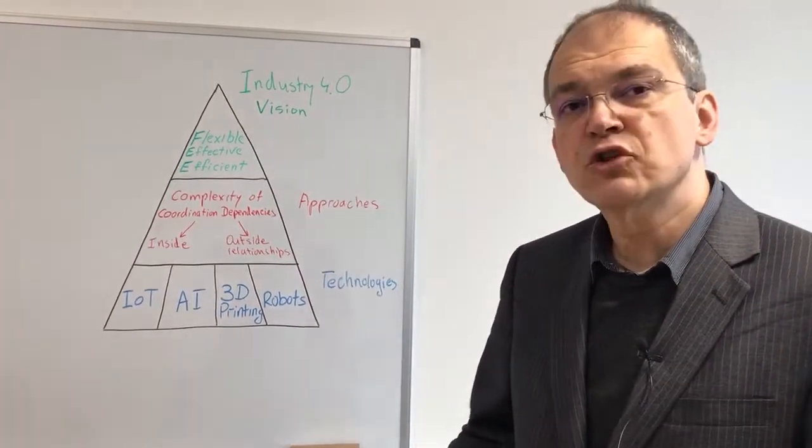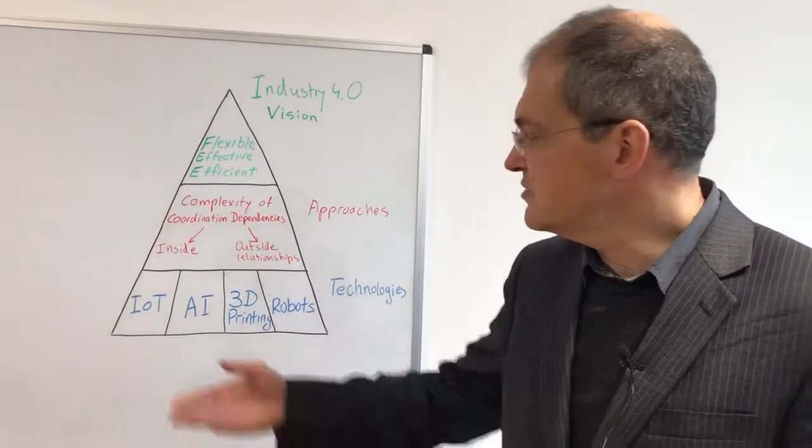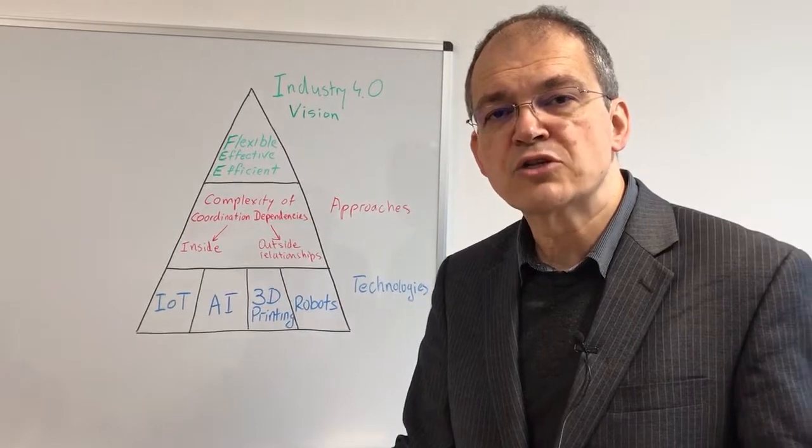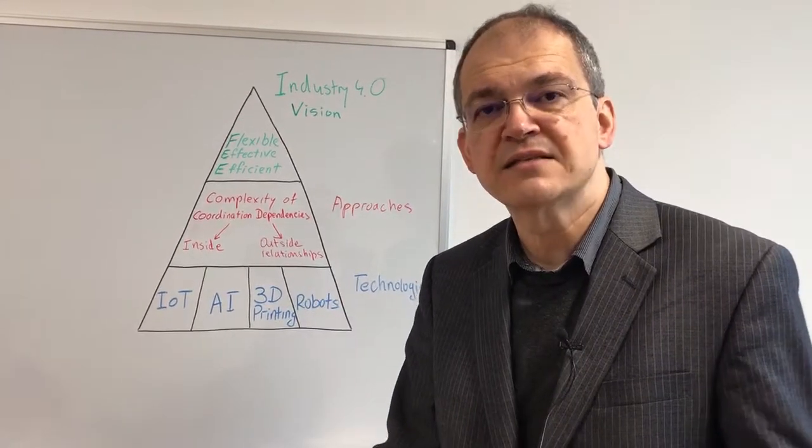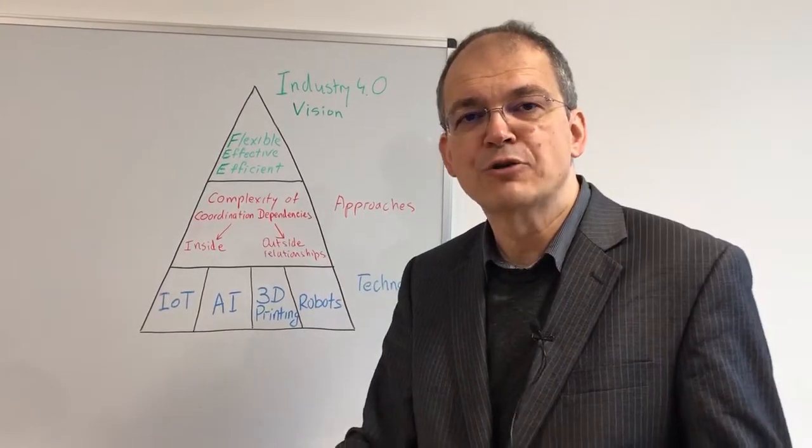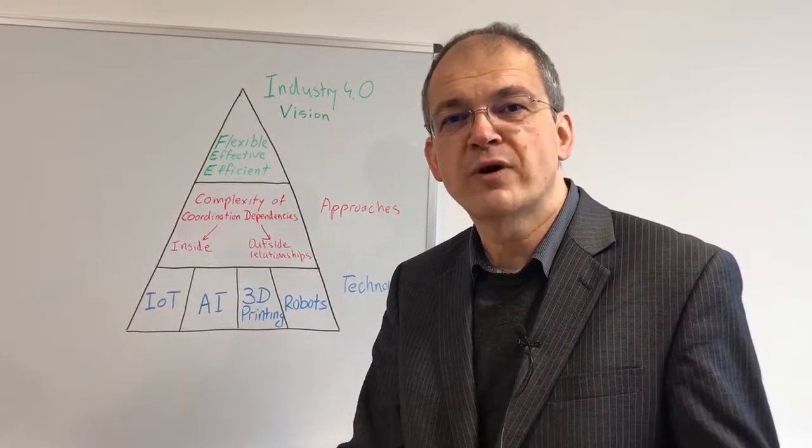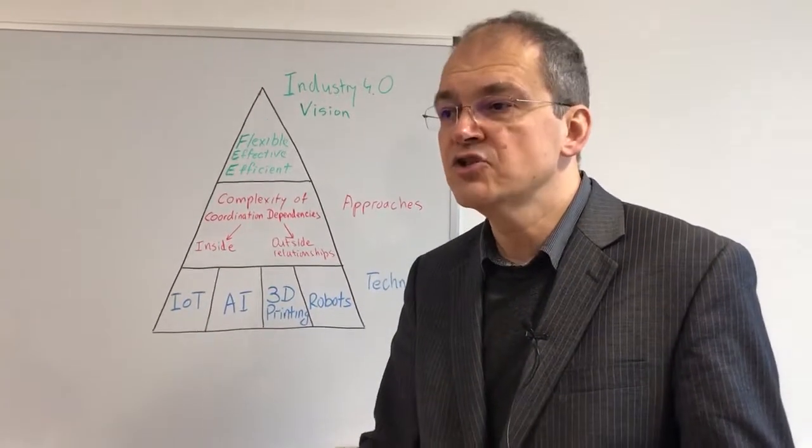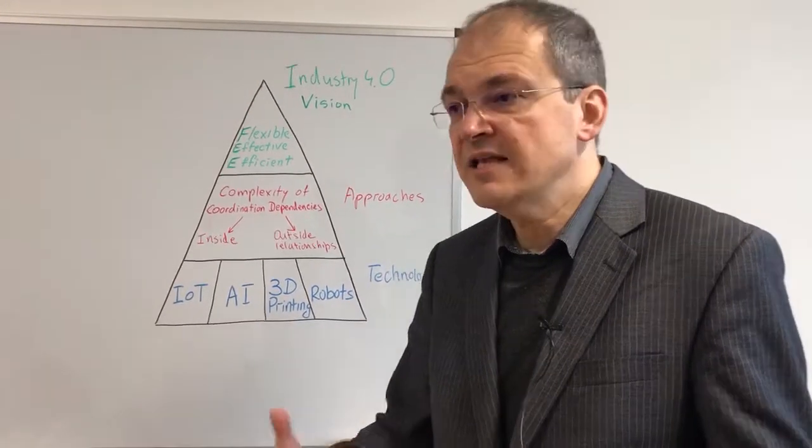This relies on the capabilities of contemporary technologies. The first relevant technology pillar is the Internet of Things which allows us to deploy thousands of sensors capturing information about the machines, being able to predict when the machine is likely to break down, creating an in silico image of our factory inside the computer.